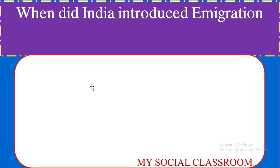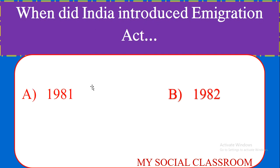When did India introduce the Emigration Act? Options: 1981, 1982, 1983, 1984. Correct answer: 1983.